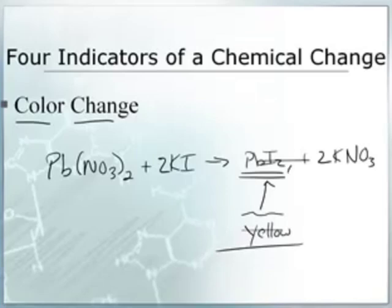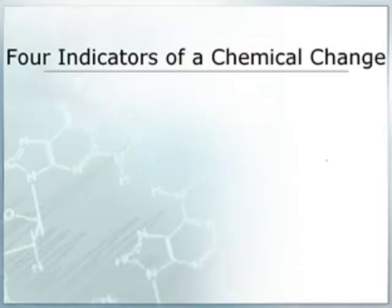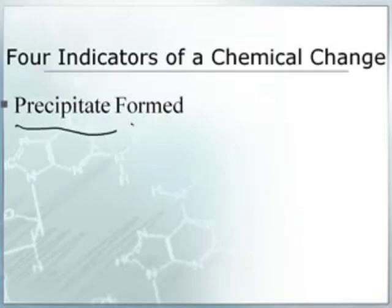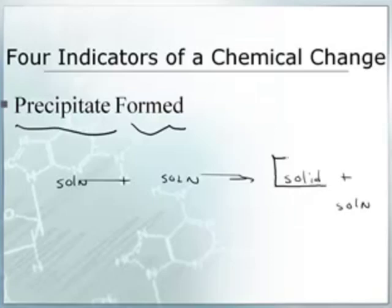Now in addition to the color change, one more indicator of a chemical reaction that we're also going to see in this is the formation of what's called a precipitate. Now a precipitate is when you take two solutions, two homogeneous mixtures of ionic compounds dissolved in water. You mix them together, and instead of still having two solutions, a solid forms.